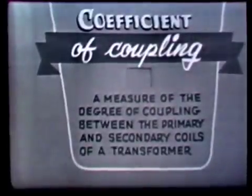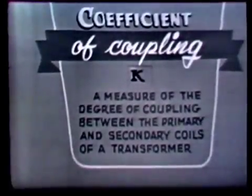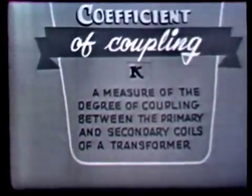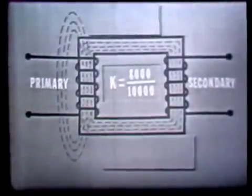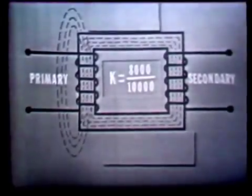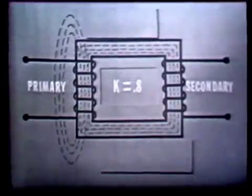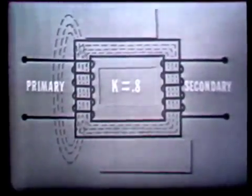The coefficient of coupling, which is represented by the letter K, is a measure of the degree of coupling between the primary and secondary coils of a transformer. The coefficient is obtained by dividing the number of magnetic lines cutting the secondary coil by the number of magnetic lines actually produced by the primary coil. For example, if the primary of this transformer produced 10,000 magnetic lines but only 8,000 lines cut the secondary, then the coefficient of coupling would be equal to 0.8.